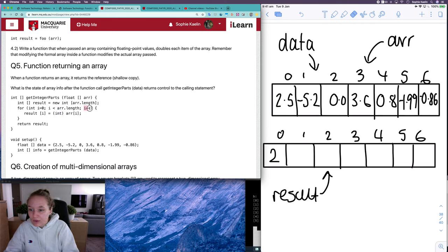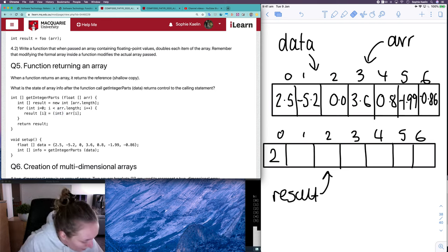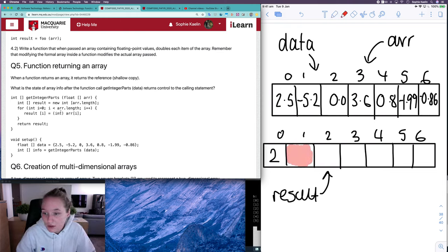Next, we know in our loop we've got i plus plus, so now i is equal to one. So we've got result one, which is this space here, is equal to, with that int casting, array one, which is this one here. So again, the same thing, we know we're going to be copying over that value, but that float value will be cast down as an int. So that will be rounding down. So what we're really passing is a negative five.